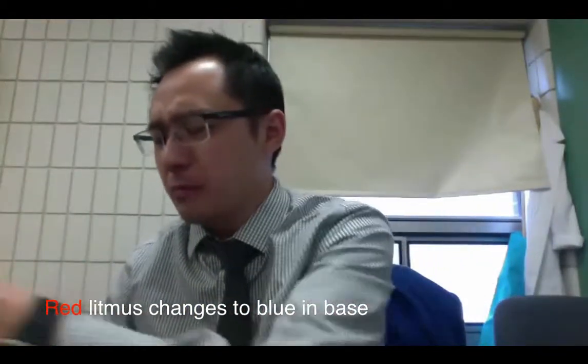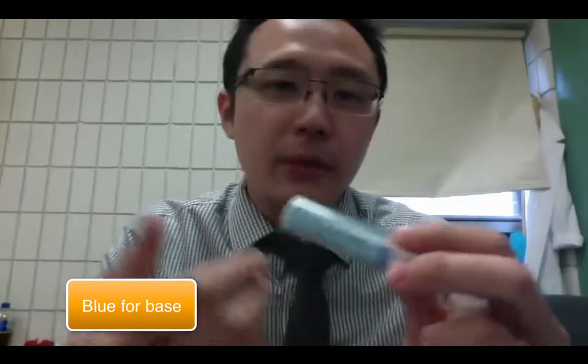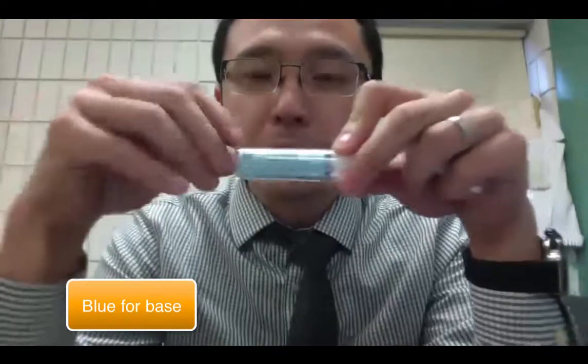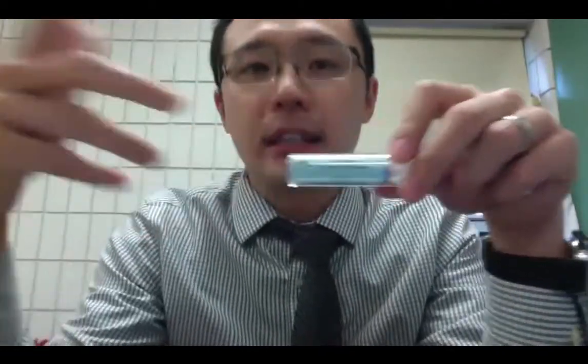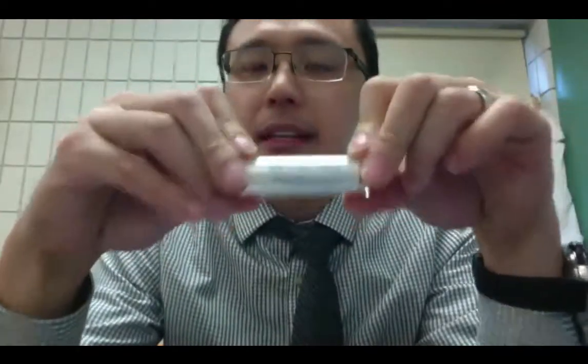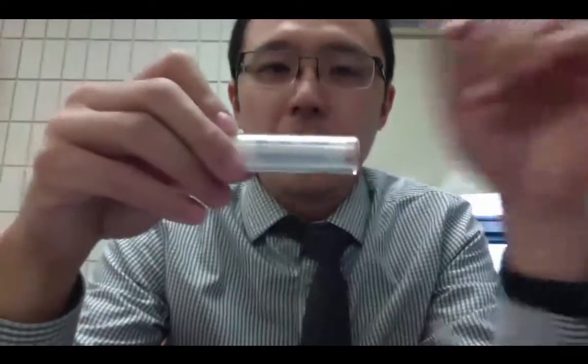So then how do we remember which one changes color and which one doesn't? You can always use the first letter of the blue litmus paper or the litmus paper color. How I like to remember it is because blue starts, the blue litmus paper starts with B, so blue is for base. Every time it turns blue, then it's basic. So if for the blue litmus paper, if it doesn't turn color, then it's basic. If you look at the red litmus paper, if this turns blue, then it's basic, B for basic. If you can remember that, then you know the opposite is going to be acidic.